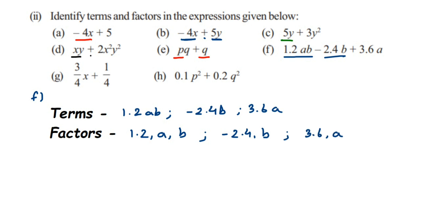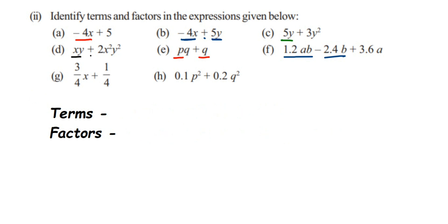Next expression: 3 by 4 times x plus 1 by 4. The terms are 3 by 4 x and 1 by 4. For the first term, 3 by 4 is the coefficient, so factors are 3 by 4 and x. For the second term, it is a constant, so the factor is 1 by 4 itself.